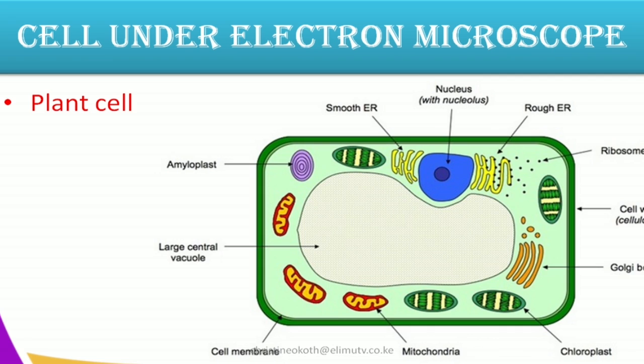Those have been the features that we observe when we look at a specimen — a plant cell or an animal cell — under a light microscope. Now when you come to an electron microscope, it magnifies specimens to higher magnification. For example, it can magnify up to 500,000 times. So you are in a position to see very tiny features that you are not in a position to see when using a light microscope. You're going to look at those additional structures that you see when you use an electron microscope.